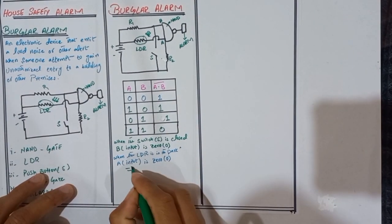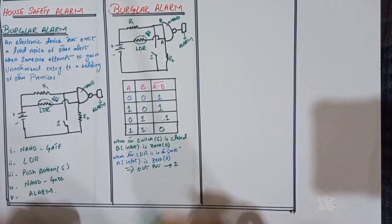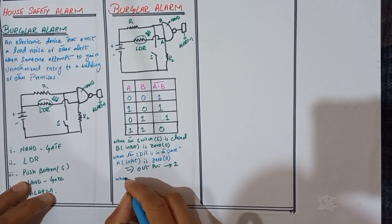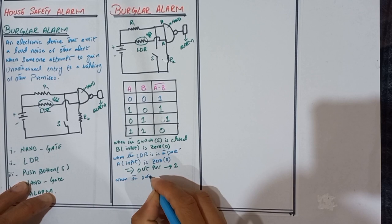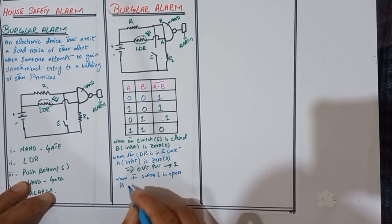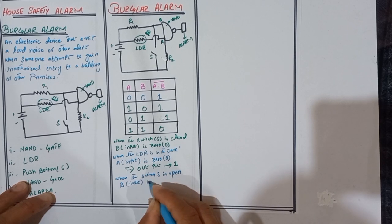So here the output becomes one. We discuss the second case when both are one. When the switch S is open, B input is one.